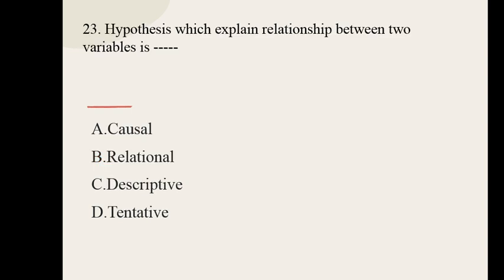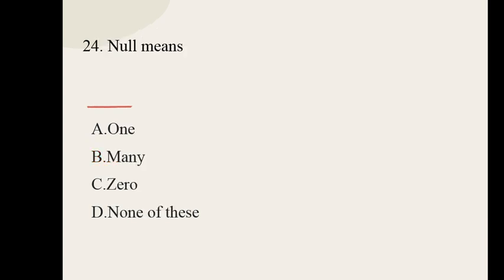Question number twenty-three. A hypothesis which explains the relationship between two variables is dash. Options are: casual, relational, descriptive, tentative. The correct option is relational. Question number twenty-four. Null means dash. Options are: one, many, zero, none of the above. The correct option is zero.